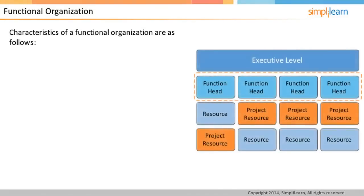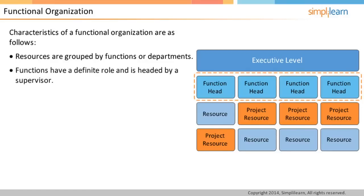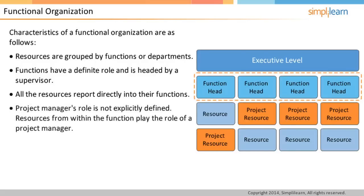In a functional organization, the resources of the organization are grouped by functions, sometimes called departments. Examples of functions could be sales, finance, administration, manufacturing, etc. Each function plays a definite role in the organization and is headed by a functional head or supervisor. All the resources in such an organization report directly into their functions. Therefore, a salesperson would report into the sales organizational hierarchy, a purchase executive would report into procurement, and so on.